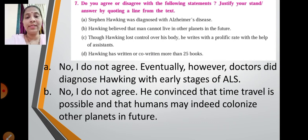Next one: Hawking believed that man cannot live on in other planets in the future. So over here also it is wrong. So no, I do not agree. He convinced that time travel is possible and that humans may indeed colonize other planets in future.